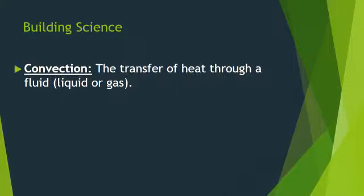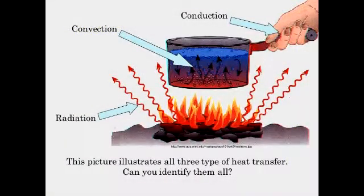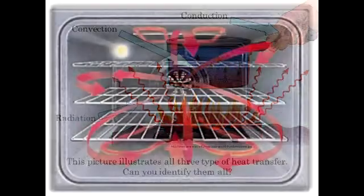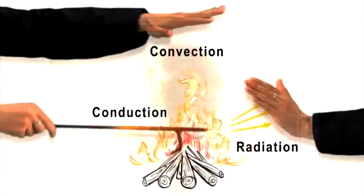Our next type is convection. Convection is the transfer of heat through a fluid, whether it be liquid or gas. A very similar example is convection ovens in our kitchen. Convection ovens work on the circulation of heat through air, and that is where convection ovens get their name. Heat rises up through the air, very similar to the picture of the fireplace.